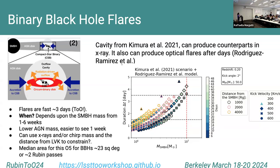The challenge is not knowing when the flare will happen — it can occur a week, two weeks, or maybe a month after the gravitational wave event. These are high-risk but scientifically interesting targets.